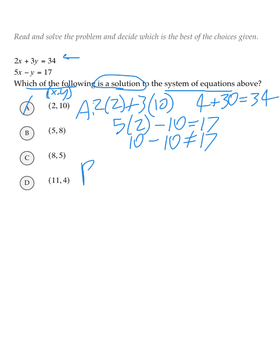Let's move on to answer B. Answer B is 5, 8. So, back to the first equation. 2 times 5 plus 3 times 8. Again, the x is going to be 5, and the y is going to be 8. 2 times 5 is 10, 3 times 8 is 24. That equals 34.